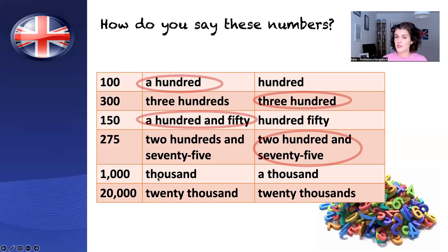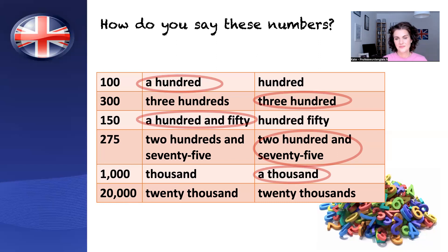Next one. Do I say 'thousand' or 'a thousand'? I say 'a thousand' — there's that use of the indefinite article again. And the last one: do I say 'twenty thousand' or 'twenty thousands'? I say 'twenty thousand'. I don't use plurals with numbers. Notice also that we use commas when we're separating large numbers.